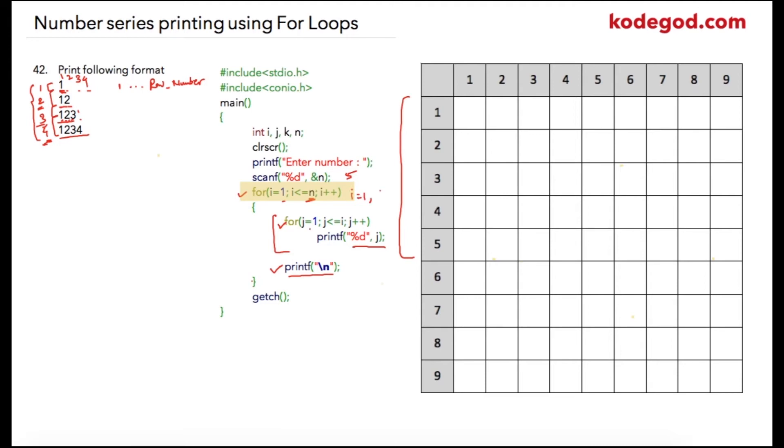The loop which is inside will execute for j is equal to 1 till j less than or equal to 1. So only for one time value of j will be printed which will be 1, and then cursor will move on to next display unit because of printf slash n. It will move on to next line.